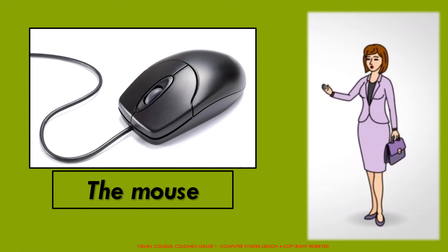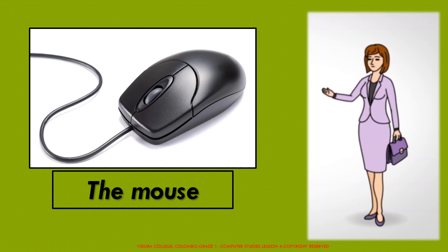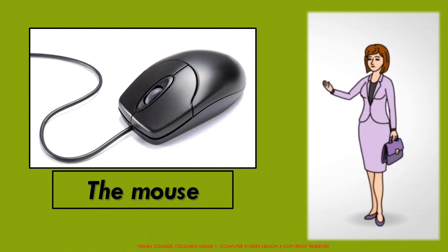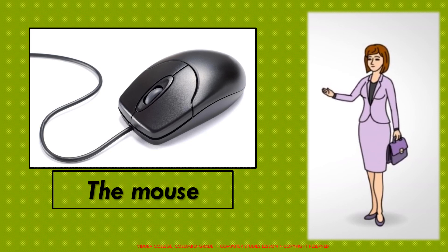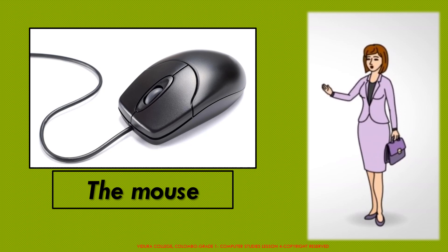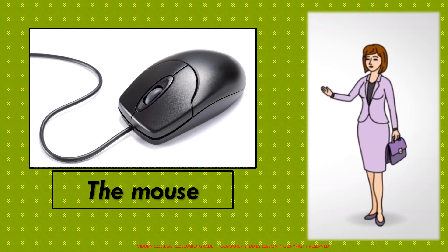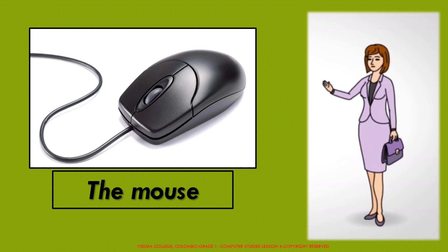What is this? Yes, it is a mouse. Can you remember we learned about the mouse? The mouse is an input device. It is used to choose things on the computer screen. How many buttons does a mouse have? A mouse has two buttons: right mouse button and left mouse button. And also a scroll wheel. What are the functions of the mouse? Click, drag, and drop.